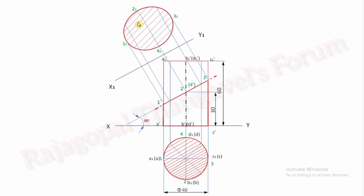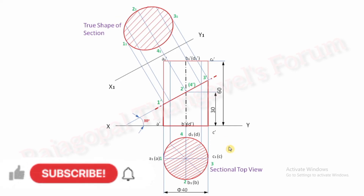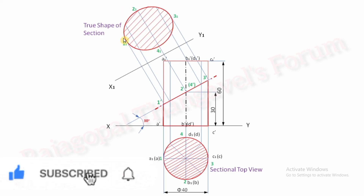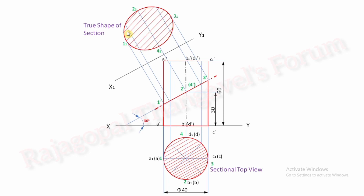Now we can do hatching. This is the sectional top view and this is the true shape of section — this is the final answer of this question. Make sure the number of divisions helps you draw a smooth surface of true shape of section. Eight divisions is more than enough to obtain a smooth surface of true shape in the final answer.